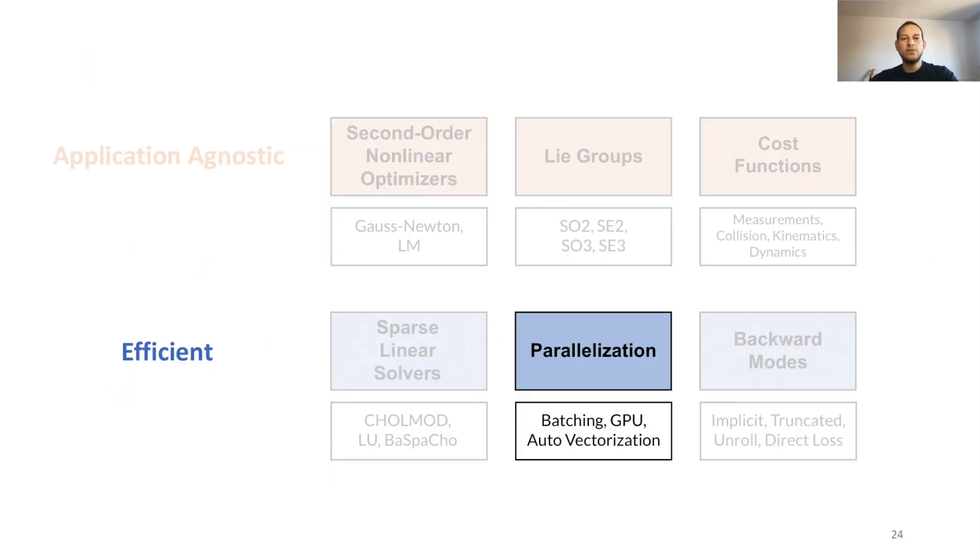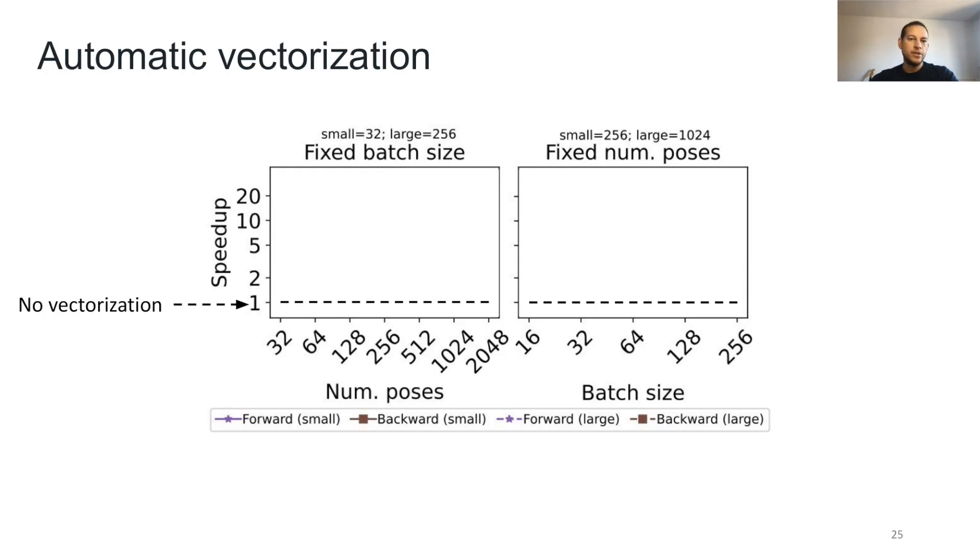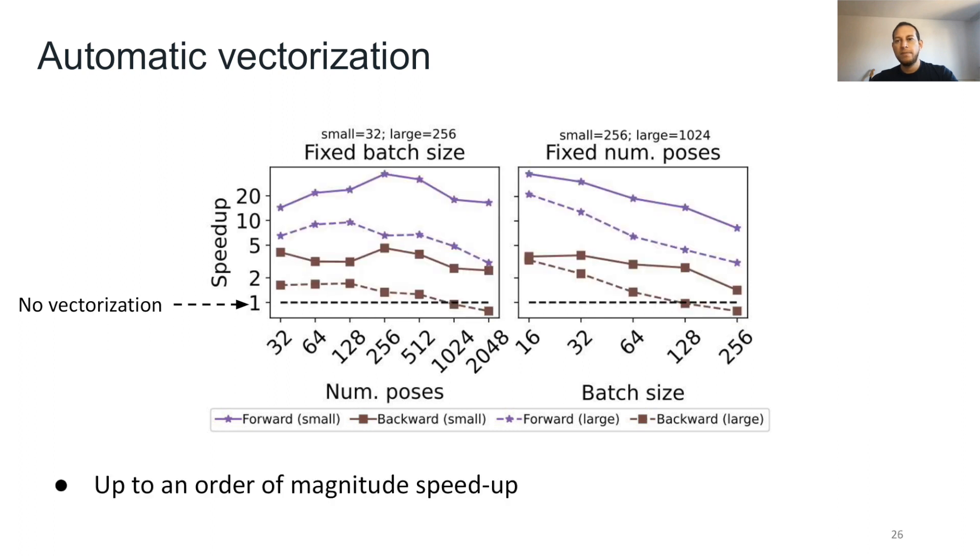We also add cost function vectorization and other efficiency operations, which automatically happen under the hood. On the same PGO problem setup, we benchmark the speed of vectorization on forward and backward times, and we find that vectorization results in up to an order of magnitude speed up.